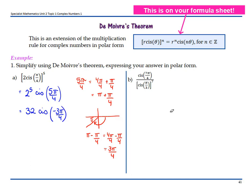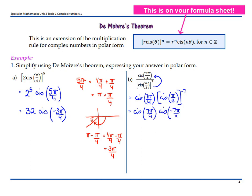Part b: cis(7π/4) over cis(π/3), all to the power of 7. Bring the denominator up to the numerator by making a negative power, so you've got cis(7π/4) times cis(π/3) to the negative 1, all to the power of 7. Using De Moivre's theorem, you're going to have cis(7π/4) times cis(−7π/3). Now we have a multiplication, so when we multiply we add our angles: 7π/4 plus (−7π/3), which is minus 7π/3.